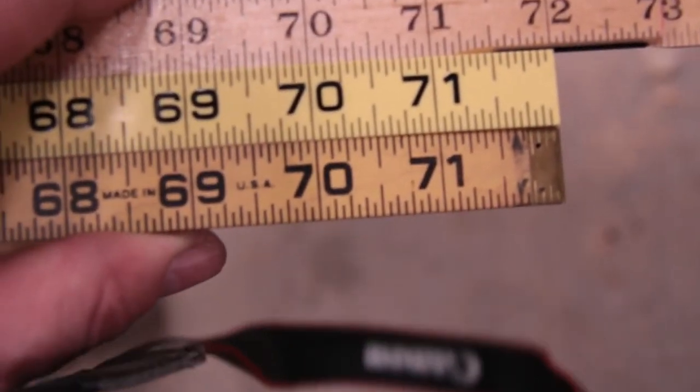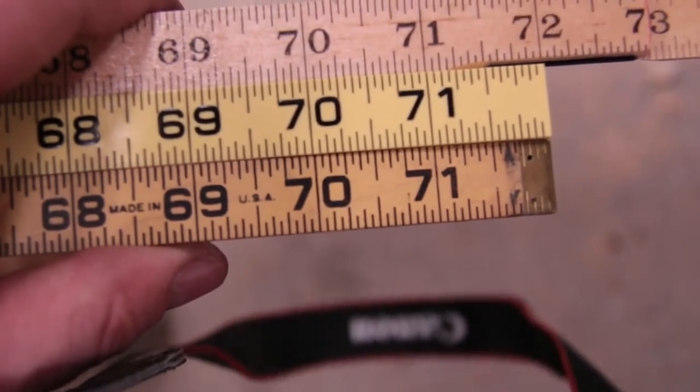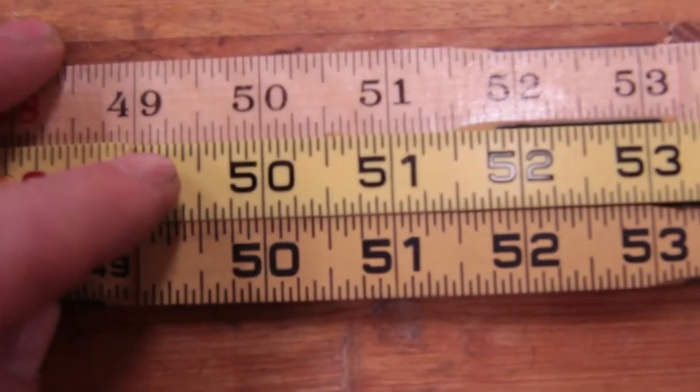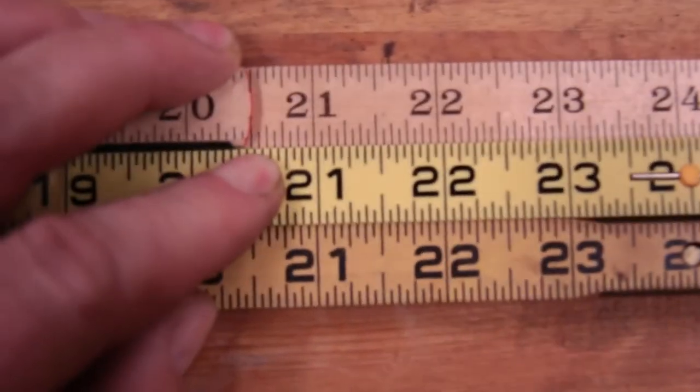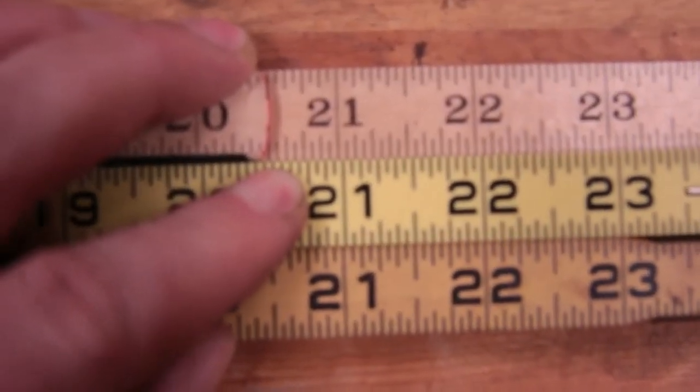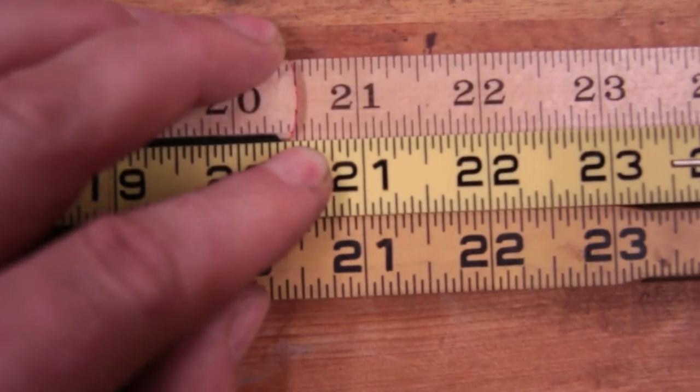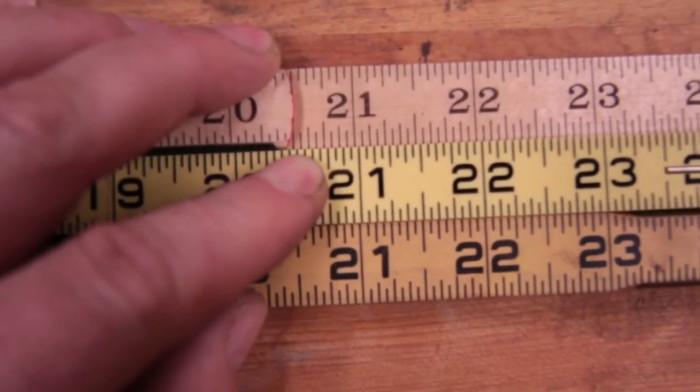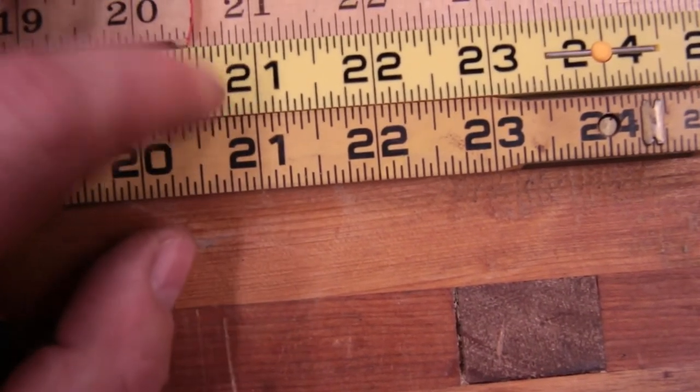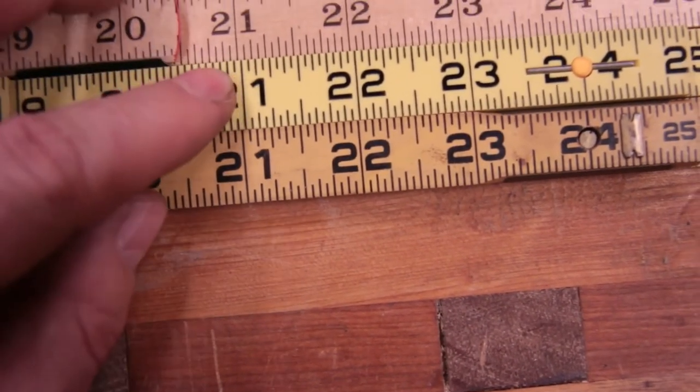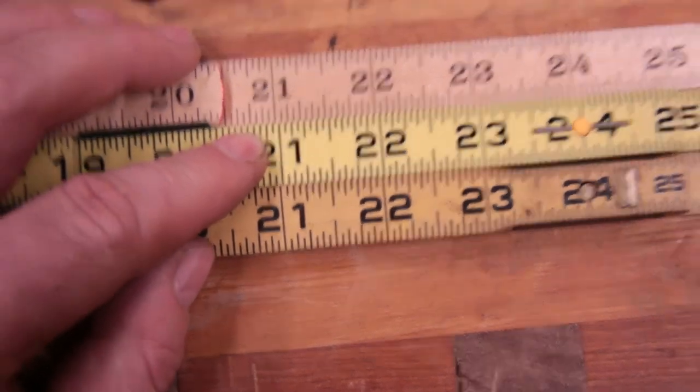Yeah, back on track at 70. So it's within a 32nd of each other. So it's probably off less than a 64th. Because I don't know which one's right exactly, because it looks like the rhino rule is long at that point.